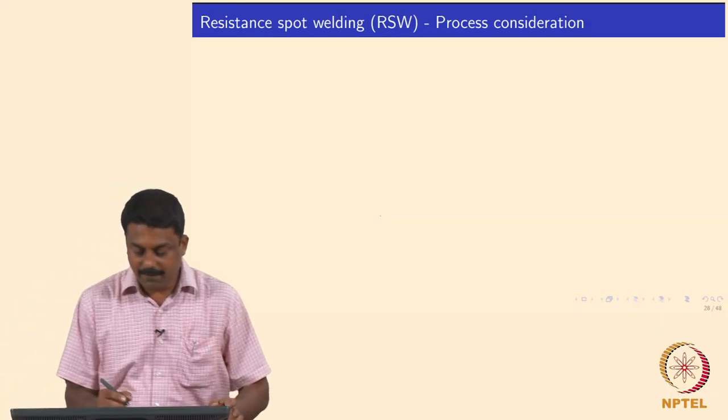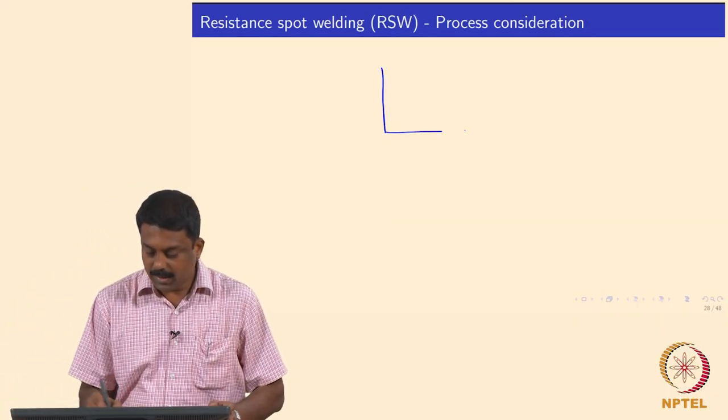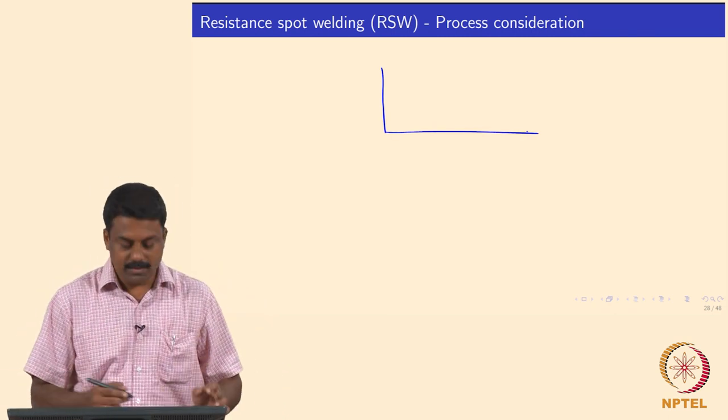We will continue from last class. We looked at the weld growth curves — we plot weld nugget diameter as a function of current or time, and then we can identify I_max and then the critical diameter required for the engineering application.